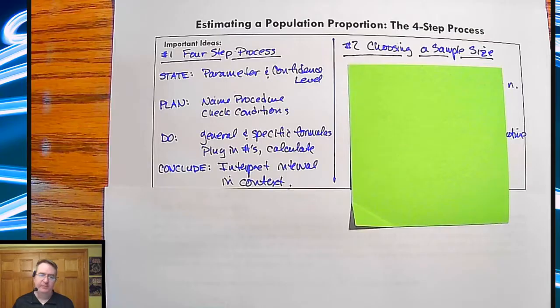Hey everybody, Mr. Hayes, Hayes' World of Math. We are formalizing how to do confidence intervals for proportions, and we're going to give you a four-step process that if you follow it and make sure the math's good, you're going to be able to get four points on this question on your AP exam.